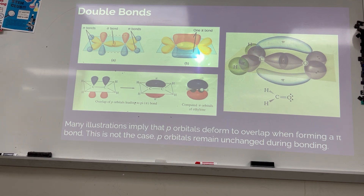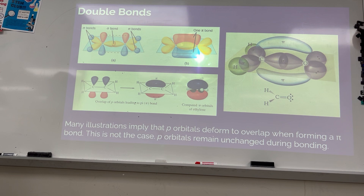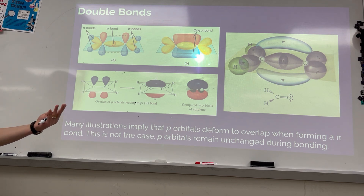I really want to say that pi bonds are weaker than sigma bonds, but I can't find any textbook that says that, and the data tables I have are actually inconsistent with it. It would make sense because there's less overlap, but I can show you data that contradicts that. I need to consult other chemistry teachers to figure out what the actual story is — stay tuned.